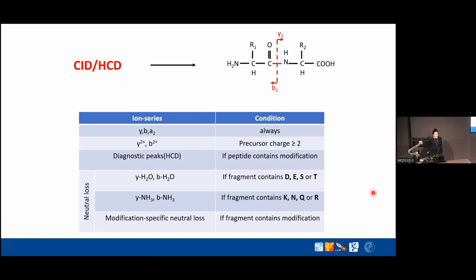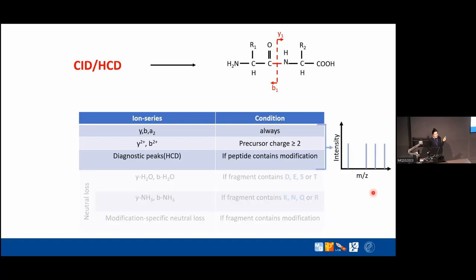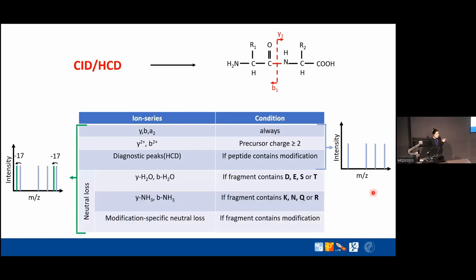For CID and HCD, this full list of fragment peaks is provided. For each candidate peptide, MaxQuant creates two theoretical spectra: one without neutral losses and one with neutral losses. The best Andromeda score wins when comparing against the experimental spectrum.